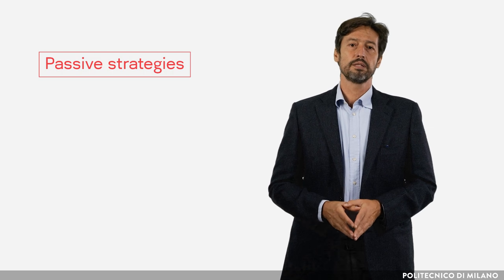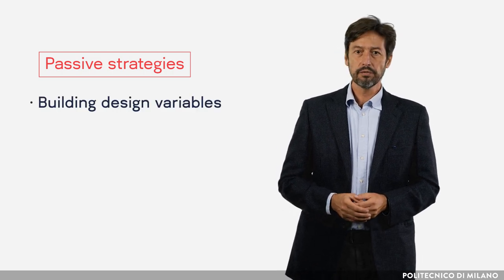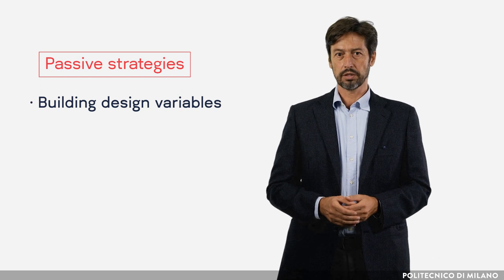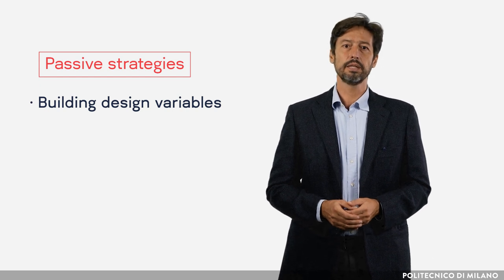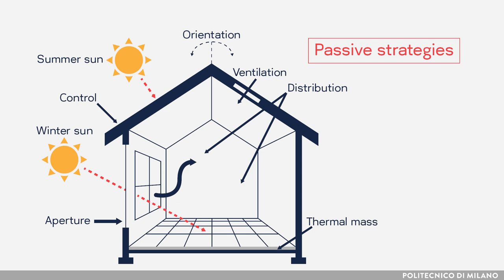Passive strategies basically deal with building design variables that have an influence on the natural interactions between the building and the surrounding environment. Architects and engineers can handle them through the choice of materials, their thickness and mass, the shape and orientation of the building, the size of the openings, and the positioning of solar shading.